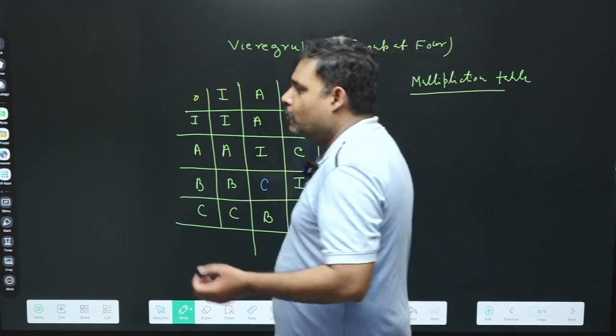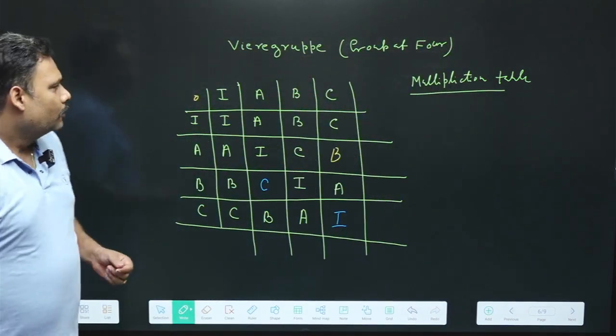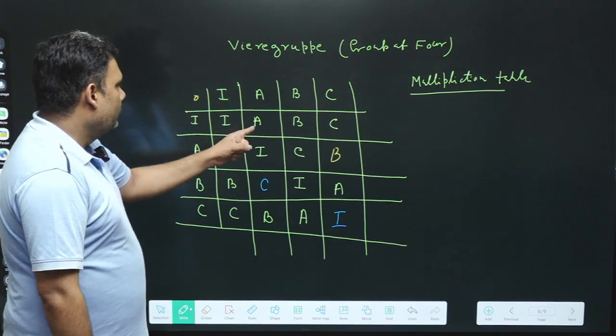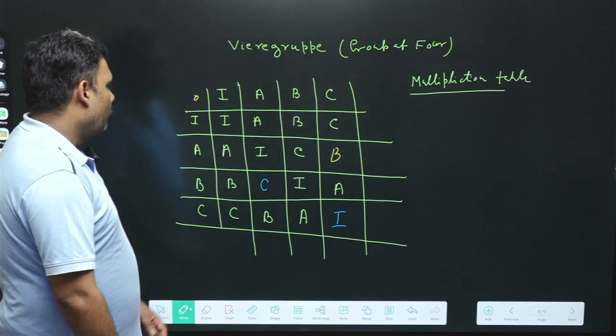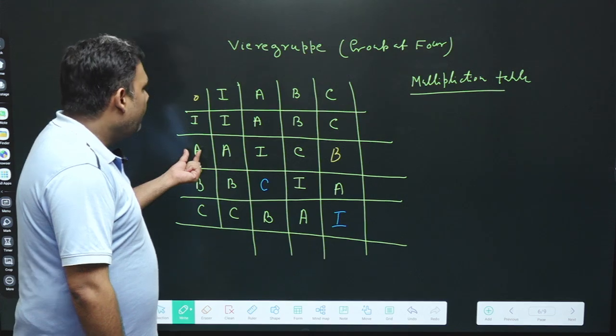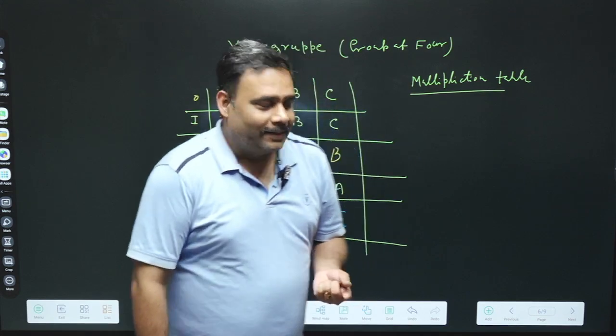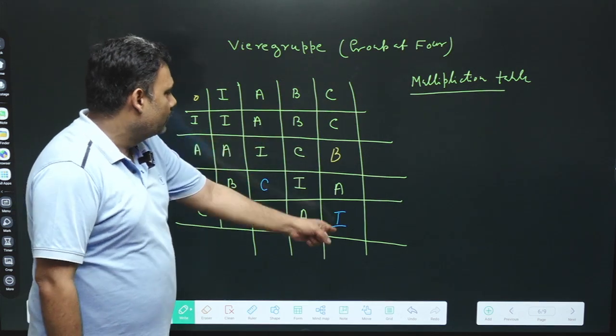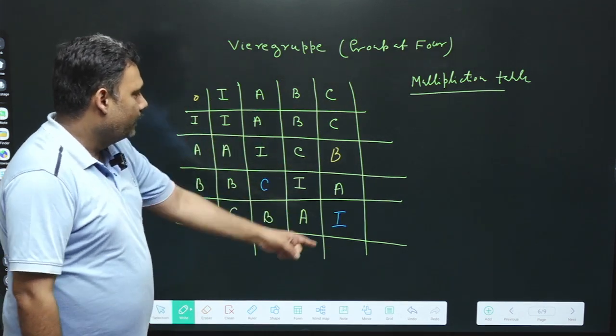Now we can find which one is the inverse and which one is the identity element. No doubt I is the identity element because I into A is A, I into B is B. But this is very interesting that A operation A is I. So A is itself inverse of A. This is very interesting. B is itself inverse of B, C is itself inverse of C.